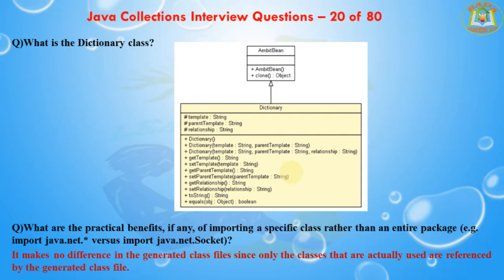The next question is: what are the practical benefits, if any, of importing a specific class rather than an entire package? For example, 'import java.net.Socket' versus 'import java.net.*'. It makes no difference in the generated class files, since only the classes actually used are referenced by the generated class files. There is another practical benefit to importing a single class, and that is avoiding errors.